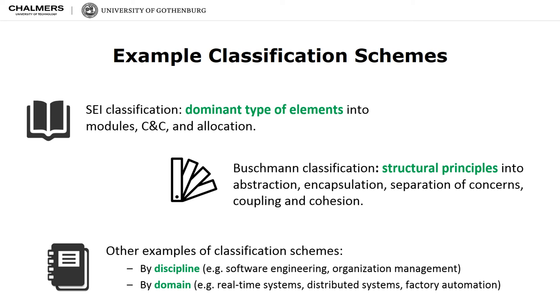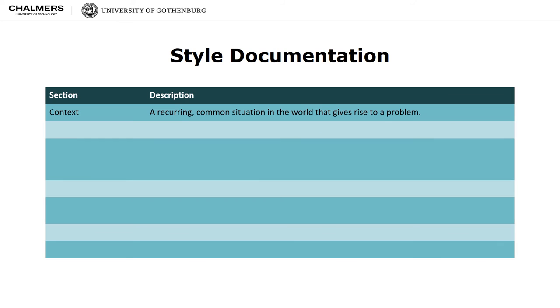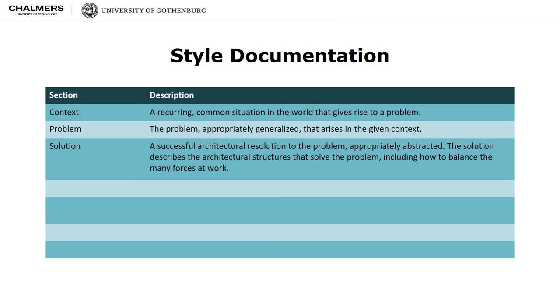In this lecture, we will consider the first classification scheme. Several different formats have been used in the literature for describing styles, and no single format has achieved widespread acceptance. However, there is broad agreement on the types of things that a style should contain. Generally, an architectural style establishes a relationship between context — a recurring common situation in the world that gives rise to a problem — a specific architectural design problem that describes the concrete design challenge that should be addressed, and the solution, which is a generic scheme to resolve the concrete problem balancing the different design forces within the context.